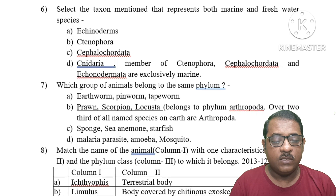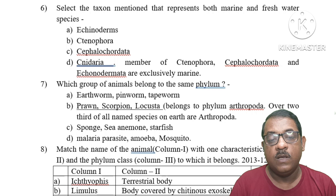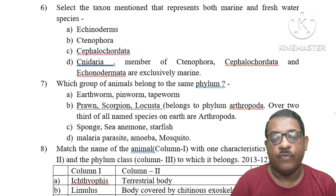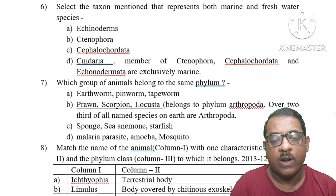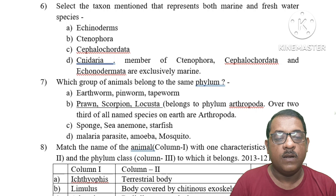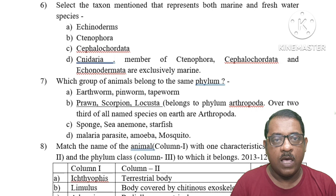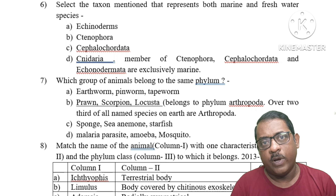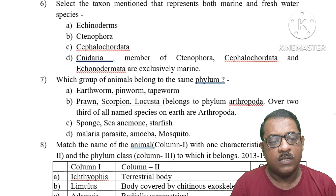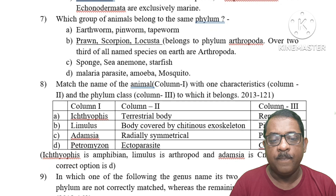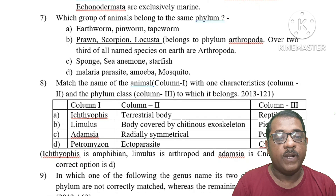Question 6: Select the taxon that represents both marine and freshwater species. Options: A, B: Ctenophora, C: Cephalochordata, D: Cnidaria. Members of Ctenophora, Cephalochordata, and Echinodermata are exclusively marine. Cnidaria, however, includes both marine and freshwater members — for example, there are freshwater Cnidaria in rivers. So the right answer is Cnidaria.